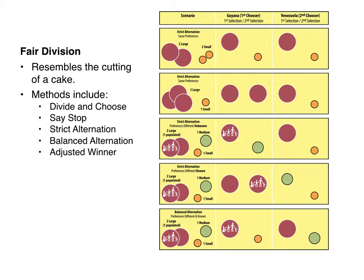Our first method is Divide and Choose. Equal division is the goal, and adverse parties have similar preferences. Divide and Choose allows one party to divide the resource into two parts, and the other to choose between the two allotments. The divider has the incentive to divide equally to maximize the value of the inferior, if not equal, part that will remain after the chooser makes the selection.